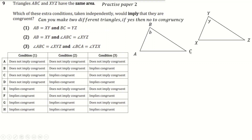We have two triangles ABC and XYZ with included angles B and Y. The first case says AB equals XY and BC equals YZ. The area of the first triangle is half·AB·BC·sin B, and the area of the second is half·XY·YZ·sin Y. We're told the two areas are the same. Setting them equal and substituting the known equal sides, everything cancels and we're left with sin B equals sin Y.